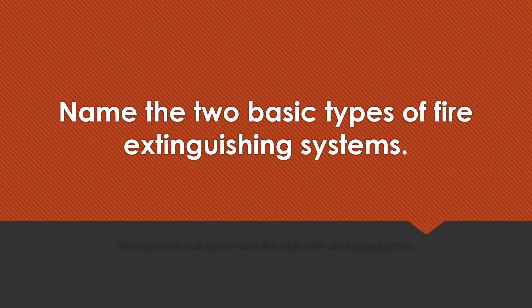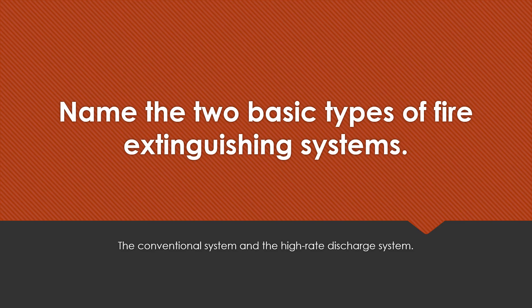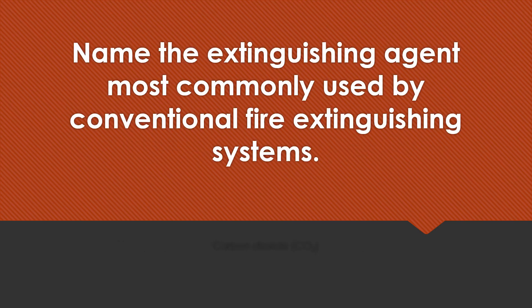Name the two basic types of fire extinguishing systems. The conventional system and the high rate discharge system. Name the extinguishing agent most commonly used by conventional fire extinguishing systems. Halon or halogenated hydrocarbon type agents, and carbon dioxide or CO2.